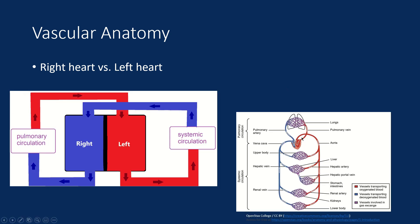Arteries are defined by going away from the heart, whereas veins are defined by moving toward the heart — it has nothing to do with oxygenation. For example, deoxygenated blood leaving the right heart travels through the pulmonary artery. It reaches the lungs, picks up oxygen, and oxygenated blood traveling back toward the left heart is carried in the pulmonary vein. Toward versus away has nothing to do with oxygenation.